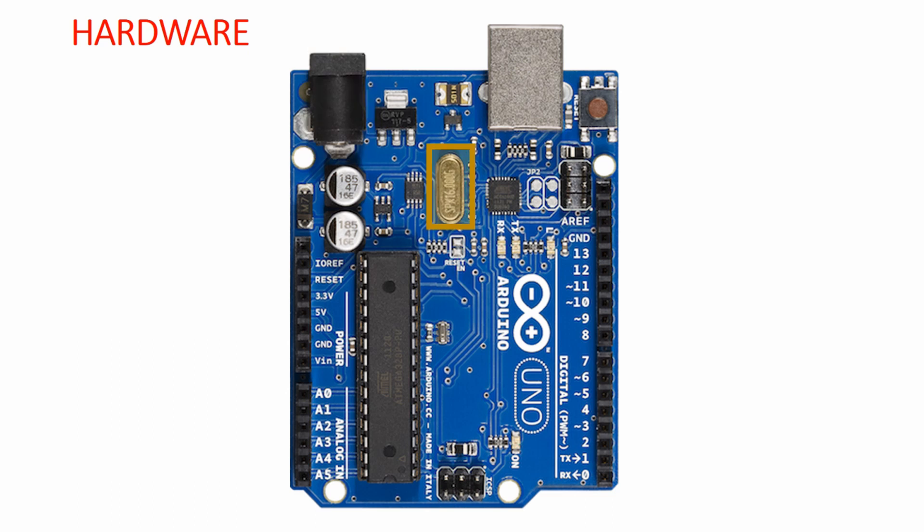Here is the 16 megahertz onboard crystal oscillator which is used for providing the clock source for the Atmega 328 Arduino microcontroller. This Arduino microcontroller can operate at a maximum speed of 16 megahertz.